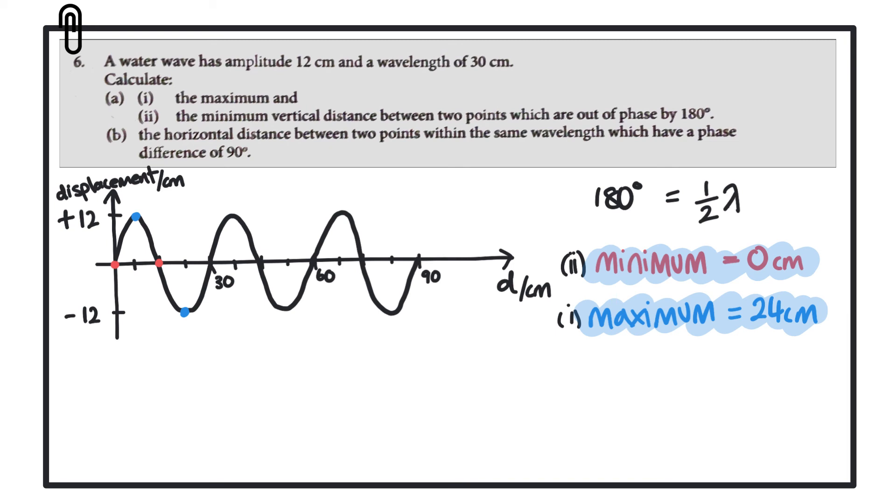For part B of the question, we want to work out the horizontal distance between two points within the same wavelength which have a phase difference of 90 degrees.